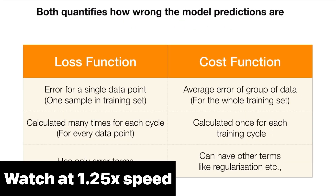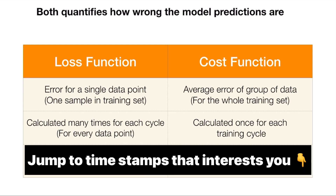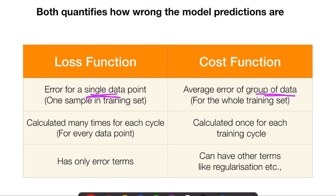Both are different. Both quantify how wrong the model predictions are. Whether you are building machine learning or deep learning models, both measure error values or deviation values. But there is a slight difference: loss function is only for a single data point, whereas cost function is for a group of data.